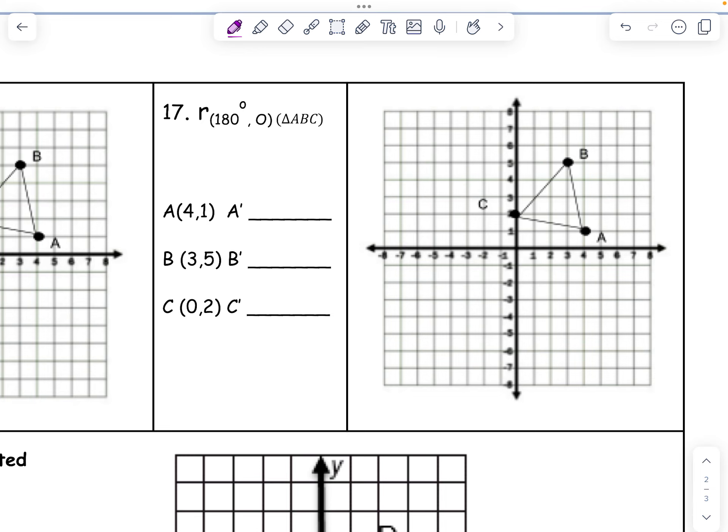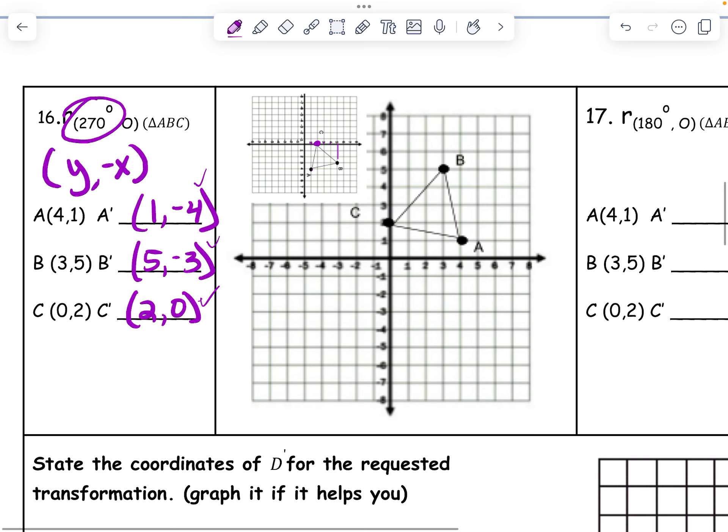180 rules are, oh, I didn't graph it. 1, negative 4 is down here, a prime. 5, negative 3 is right here, b prime. And 2, 0 is right here, c prime.